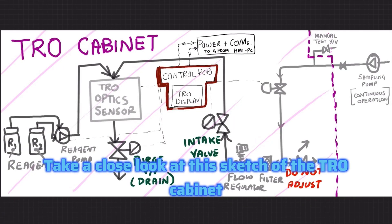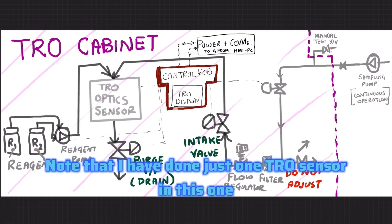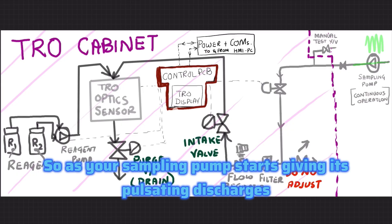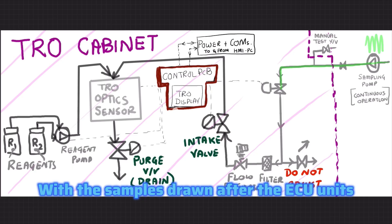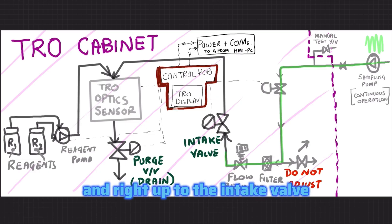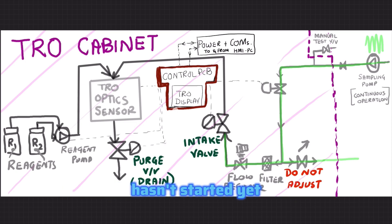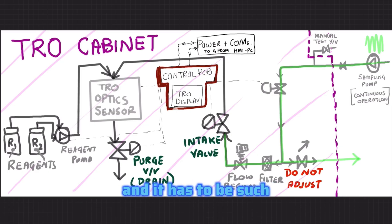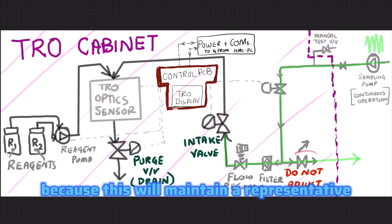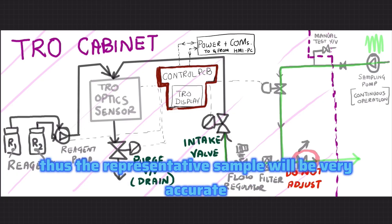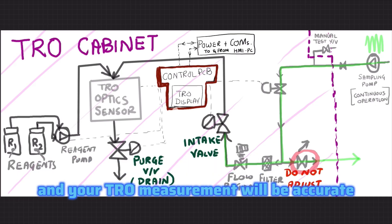Take a close look at this sketch of the TRO cabinet. Note that I have shown just one TRO sensor here, but there are two in every system. As the sampling pump starts giving its pulsating discharge with samples drawn after the ECU units, the sample gets into the TRO cabinet, through the intake filter, then the manual flow regulator, and right up to the intake valve. Note that the sample doesn't yet flow into the TRO optic sensor because the measuring process hasn't started yet. It's important to note this bypass valve — it is partially open and must stay that way. Do not adjust it, because this maintains a representative sample. Even when the TRO cabinet is not measuring, the sample will continue to flow through the system, keeping the representative sample very accurate.